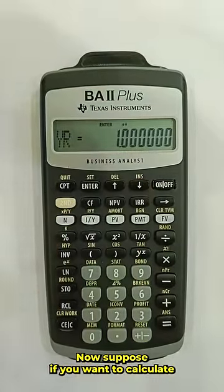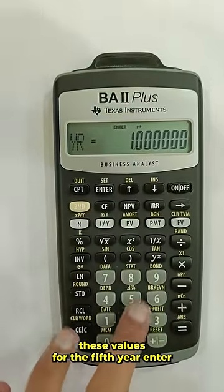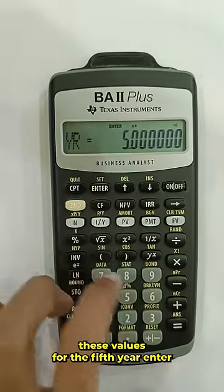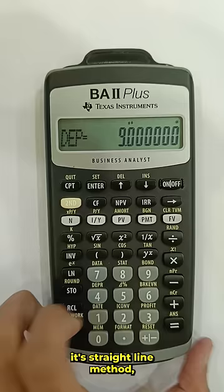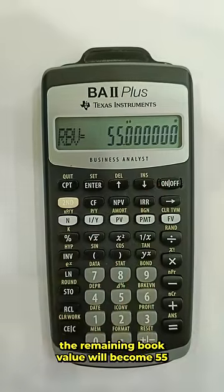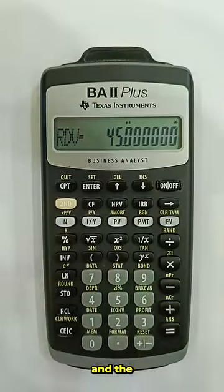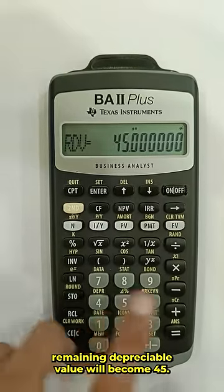Now, suppose if you want to calculate these values for the fifth year, enter. So, now the depreciation will remain same because it is straight line method. The remaining book value will become 55 and the remaining depreciable value will become 45.